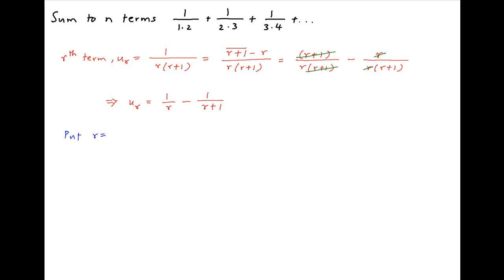Now put r is equal to 1. The first term of the series, u_1, can be written as 1 upon 1 minus 1 upon 2. Similarly, put r is equal to 2. We get u_2 is equal to 1 upon 2 minus 1 upon 3. Similarly, u_3 is equal to 1 upon 3 minus 1 upon 4, and so on. Finally, u_n is equal to 1 upon n minus 1 upon n plus 1.